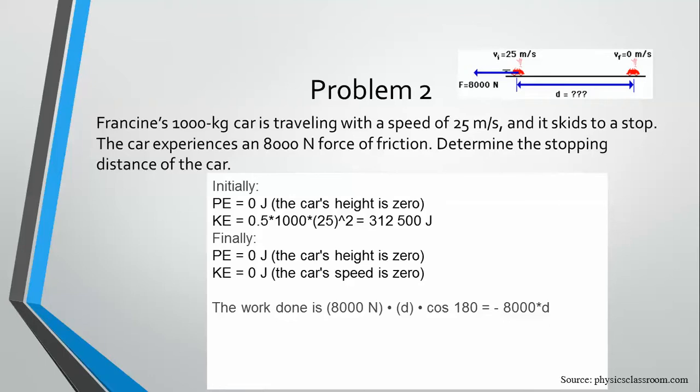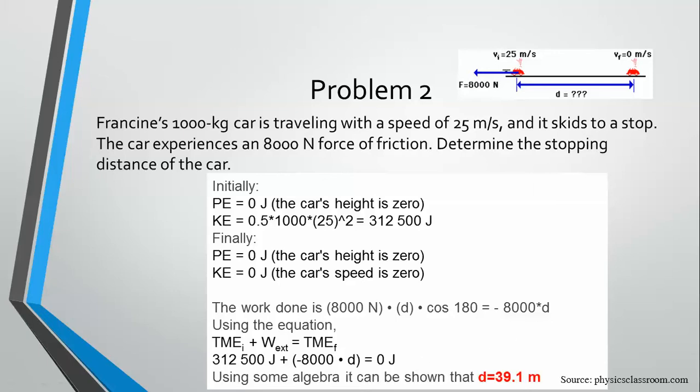So the work done on the system is force times the distance times the cosine of 180. So that is force of 8,000 newtons. The distance is what we're trying to find. And we know that the angle is 180 because the friction is going against the displacement. So we're going to use the equation. Our total initial mechanical energy plus the work equals our total final mechanical energy. And we've already calculated potential and kinetic initially and potential and kinetic final. We set up the equation. This is our initial energy plus the work done equals our final energy. And solve for d. We get 39.1 meters.